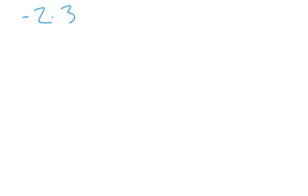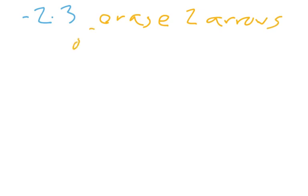What if we have negative two times three? When the first number is positive, it tells you to draw two arrows of length three. We have to do something sort of the opposite here. One way to look at that is we could erase two arrows of length three. Positive means draw; negative means erase.